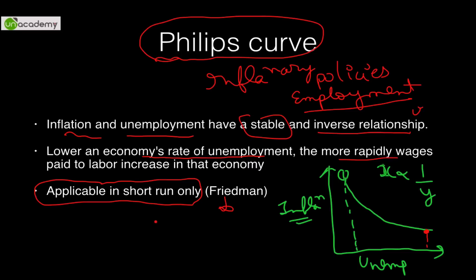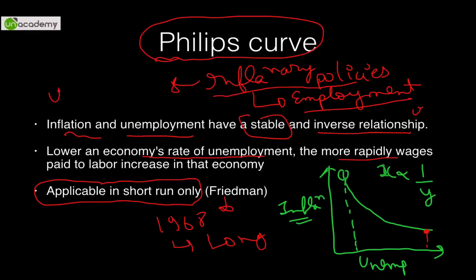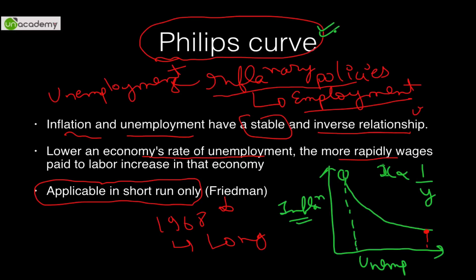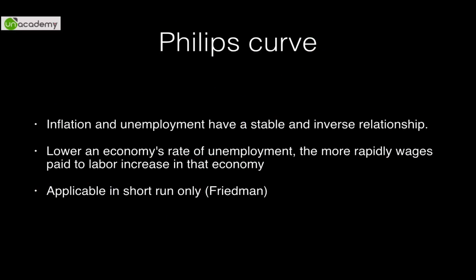Milton Friedman, who won the Nobel Prize in 1976, stated in 1968 that inflationary policies cannot lead to sustained employment generation — they will always lead to unemployment in the longer run. Therefore the Phillips curve is no longer considered the gold standard; it is now used in modified form. UPSC is fond of asking about it, which is why it was mentioned.